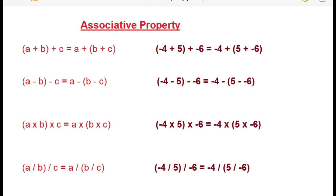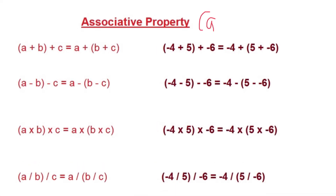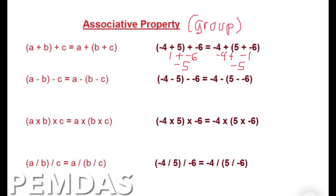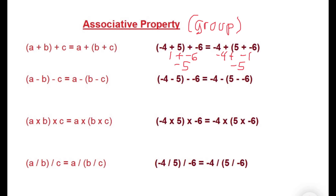The associative property deals with grouping. The order stays the same, but if you group terms differently, are both sides still equivalent? The acronym PINDAS is important here: parentheses, exponents, multiplication, division, addition, and subtraction. For addition: 1 minus negative 6 equals negative 5, and on the right side, negative 4 plus negative 1 also equals negative 5 — so these two are equivalent.